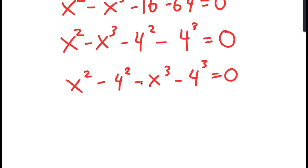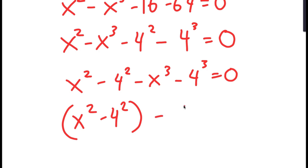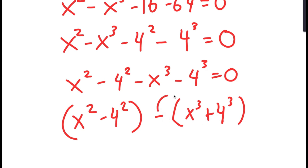There are two properties I'm going to use. I'm going to rewrite this as x squared minus 4 squared, grouped with minus x cubed plus 4 cubed — the plus appears because the negative sign distributes.